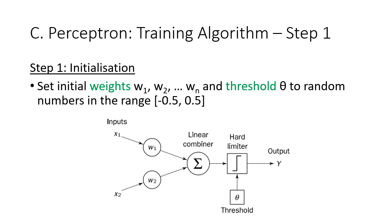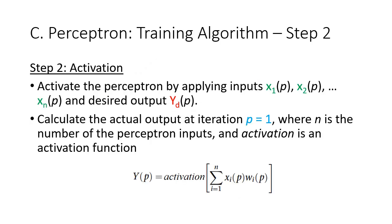Step 1 is initialization. Weights and threshold will be assigned random numbers in the range of negative 0.5 to 0.5. These weights will be adjusted while the threshold is constant. Step 2 is the activation step, where the output is calculated using this function.